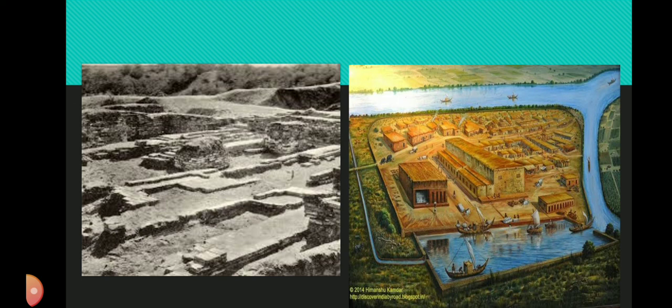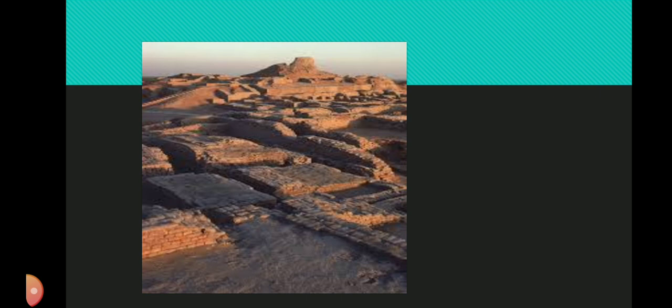Citadel of Harappa: A citadel is the core fortified area of a town or city. The citadel at Harappa was 12 meters tall, located on the western end of the site. It represented a parallelogram 420 meters in length from north to south and 196 meters from east to west, with a large staircase running up the side of the mound. Several large buildings and structures on the citadel mound suggest it was used for public gathering, religious activities, and important administrative functions.